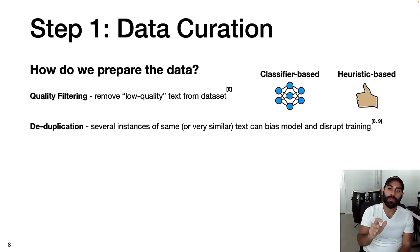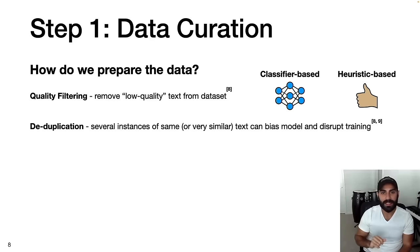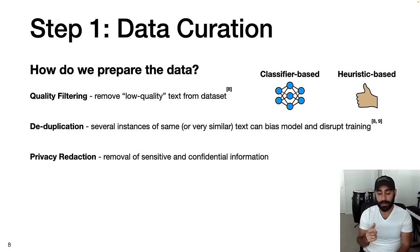Next is deduplication — removing several instances of the same or very similar text. Duplicate text can bias the model and disrupt training; for example, if the same webpage ends up in both the training and testing datasets, it creates an unfair assessment of model performance. Another key step is privacy reduction. Especially for text grabbed from the internet, it might include sensitive or confidential information. If sensitive information makes its way into the training dataset, it could be inadvertently learned by the language model and exposed in unexpected ways. Finally, we have the tokenization step, which is essentially translating text into numbers, because neural networks understand numbers, not text directly.